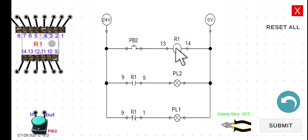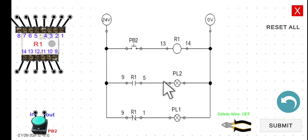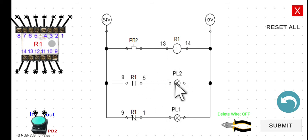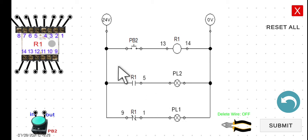However, if we press PB2, R1 will be in its energized form. The normally open contact will close and the normally closed contact will open. When the normally open closes, PL2 will turn on. When the normally closed opens, PL1 will turn off. If we release it again, it de-energizes: PL2 turns off and PL1 turns on — these are the alternating lamps.